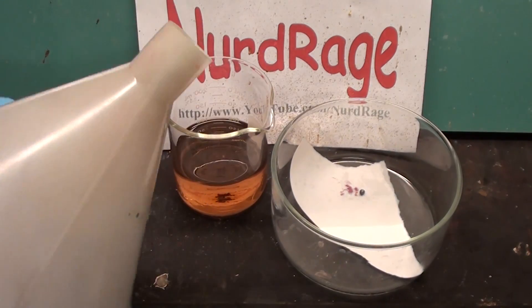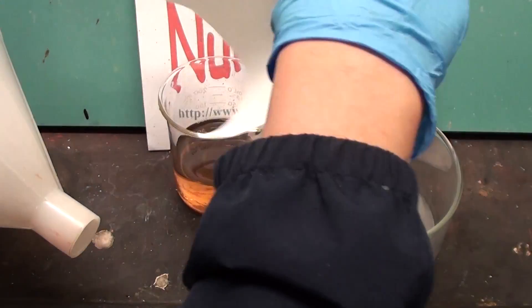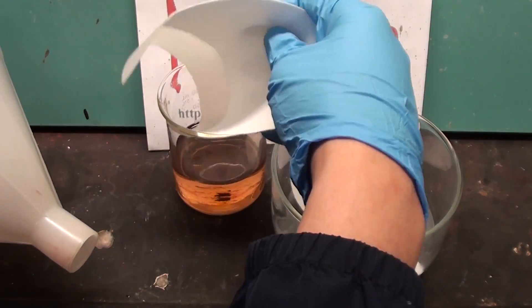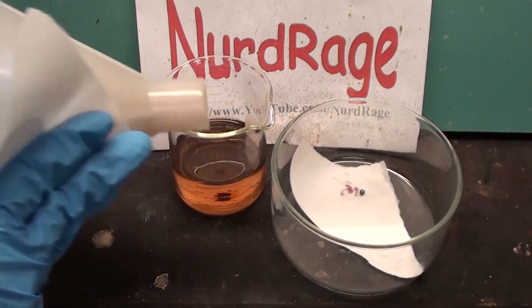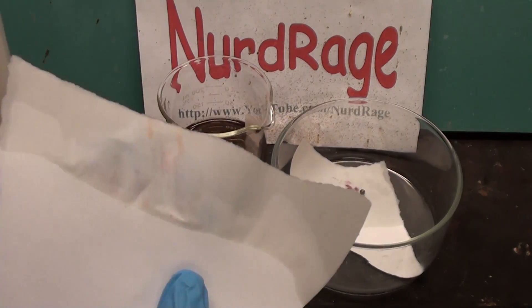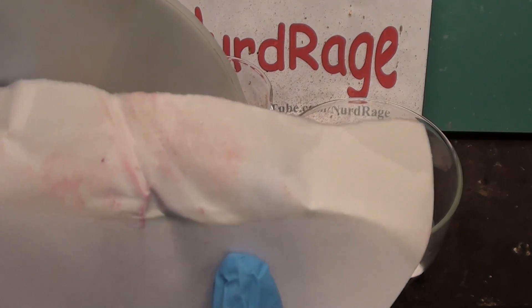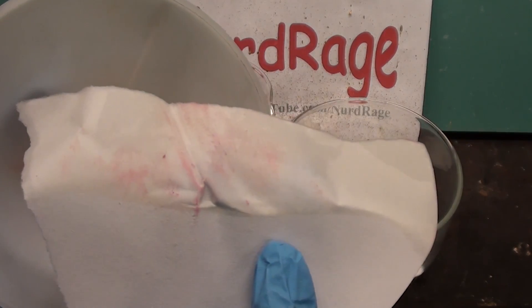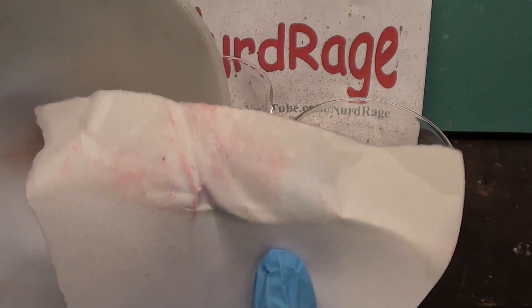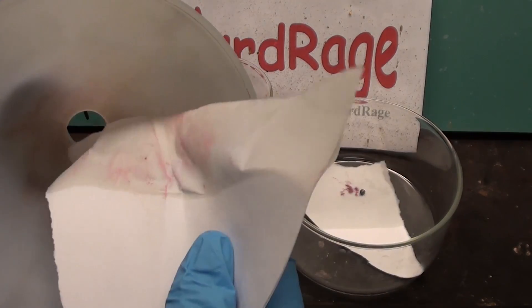Now I have here a funnel that was used to filter a lead containing solution. And although it was cleaned let's see if we can still detect lead on it. Not much on the outside. What about the inside? And there it is. The purple color shows there is a trace but detectable amount of lead still in the funnel. Looks like it's going to need some more cleaning.